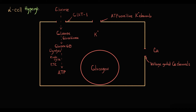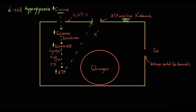There are two scenarios. In the case of hyperglycemia, if blood glucose level is high, then a high amount of glucose enters the cell, and this results in the production of a high amount of ATP molecules. High ATP molecules induce opening of ATP-sensitive potassium channels.